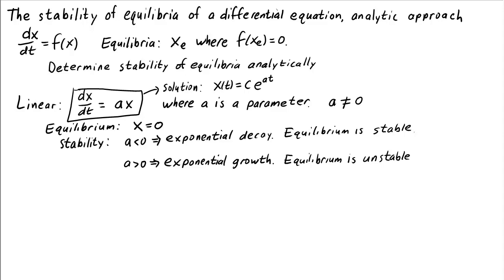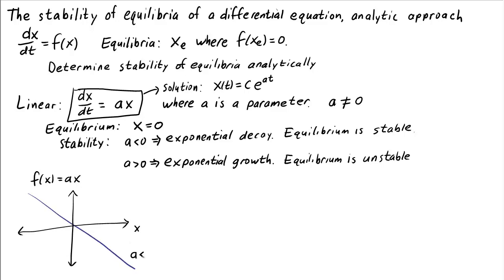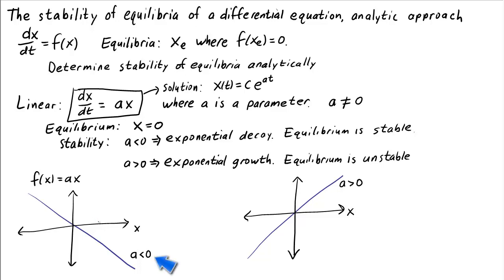This is consistent with our earlier graphical approach. The linear system corresponds to f of x equals ax, which if we were to plot it would look like a line. When a is negative, f is negative for positive values of x, so x decreases; for negative values of x, f is positive, so x increases. In both cases, the trajectory x(t) moves towards the equilibrium x equals 0.